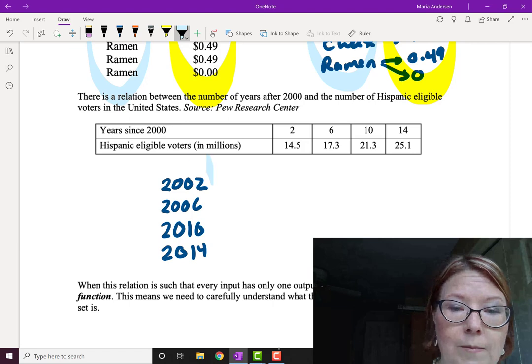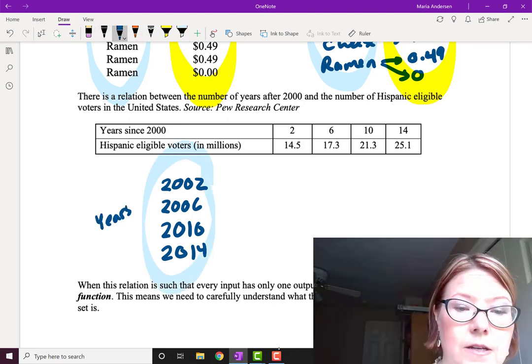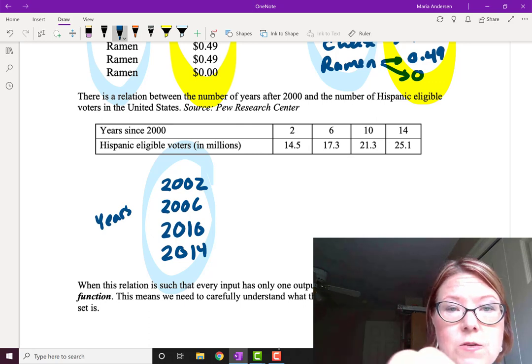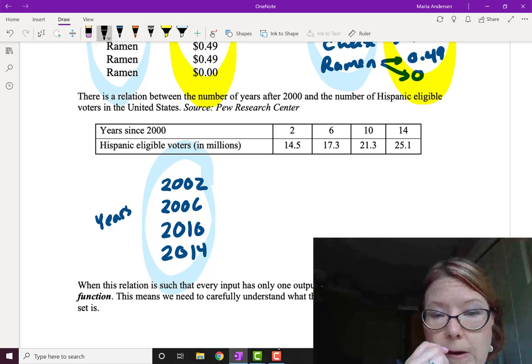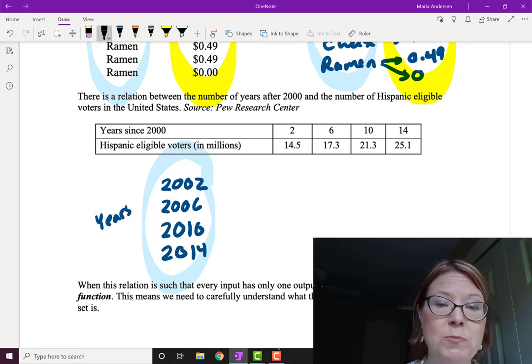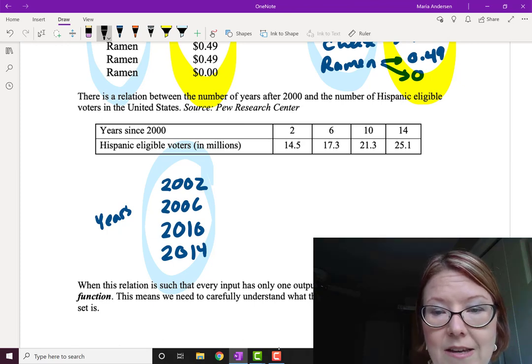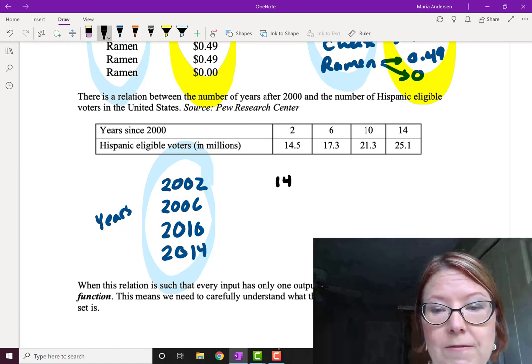So this is our input set. That is years. And when we look at those years, we can get out the values of what the number of Hispanic eligible voters in millions is.